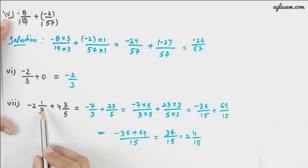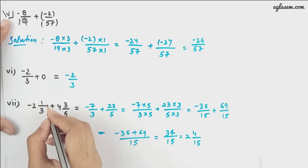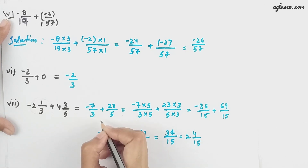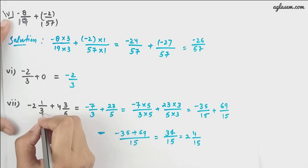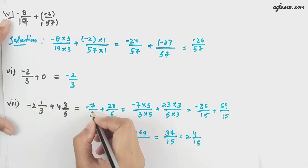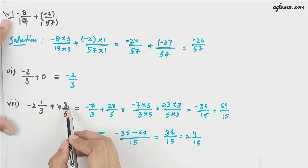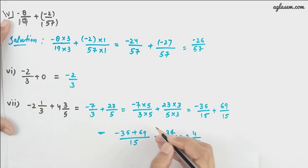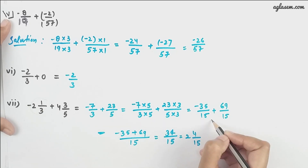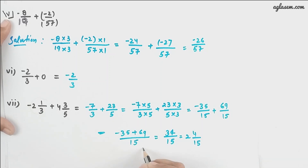Moving further, we have -2⅓ plus 4⅗. First, we convert the mixed fractions to p/q form: -2⅓ becomes (-2×3 + 1)/3 = -7/3, and 4⅗ becomes (4×5 + 3)/5 = 23/5. Making the denominators the same gives -35/15 plus 69/15. The LCM is 15, and our answer is 34/15, which converts back to the mixed fraction 2 4/15.